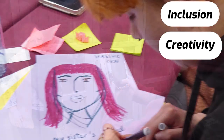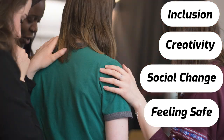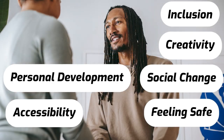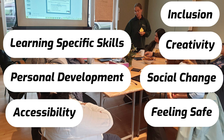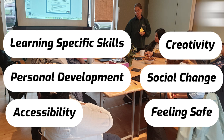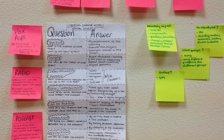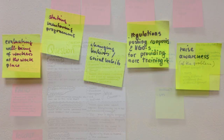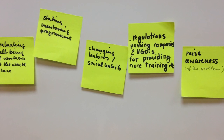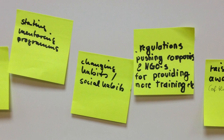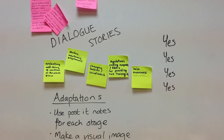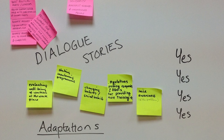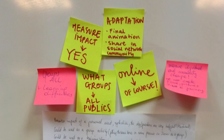Quality indicators could include the following: inclusion, creativity, social change, feeling safe, accessibility, personal development, learning specific skills — and there will be many more that are specific to your organisation, the services that you provide and the work that you do. Quality indicators help to give an organisation focus on the specific information they need to collect, and help organisations to stay focused on their main aims and core values, as well as the practicalities and logistics of running services, training, and day-to-day care and support. Having a quality indicator framework can help organisations focus on the impact that they are measuring.